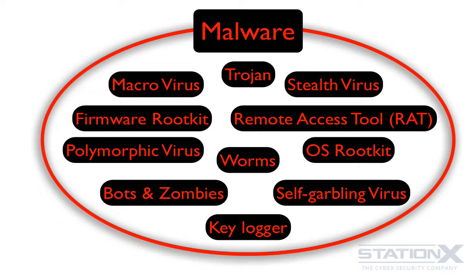You have Remote Access Tools, or RATs. These are malicious programs that run on your system and allow intruders to access it remotely — think of it like a version of TeamViewer for the hacker. Popular ones at the moment include Havix, AlienSpy, and ComRAT. These can be bought or even downloaded freely.